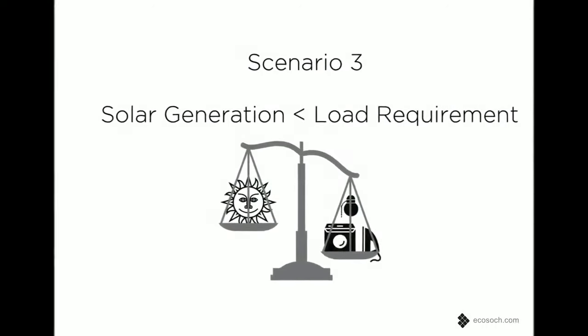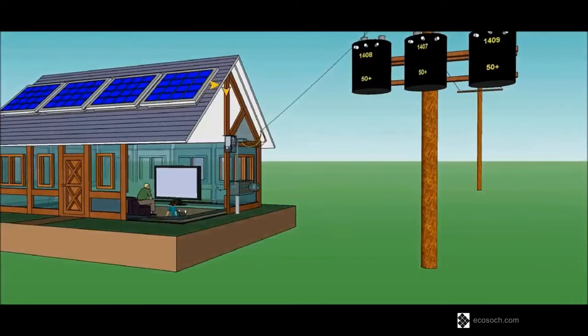When load requirement is greater than the solar generation, all solar power will be self-consumed by the loads. Meanwhile, the grid will join to support the excess load demand.